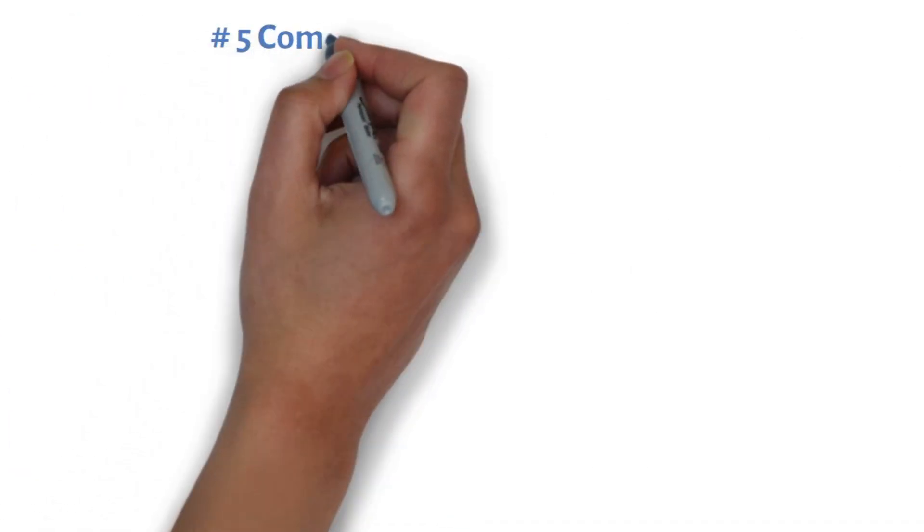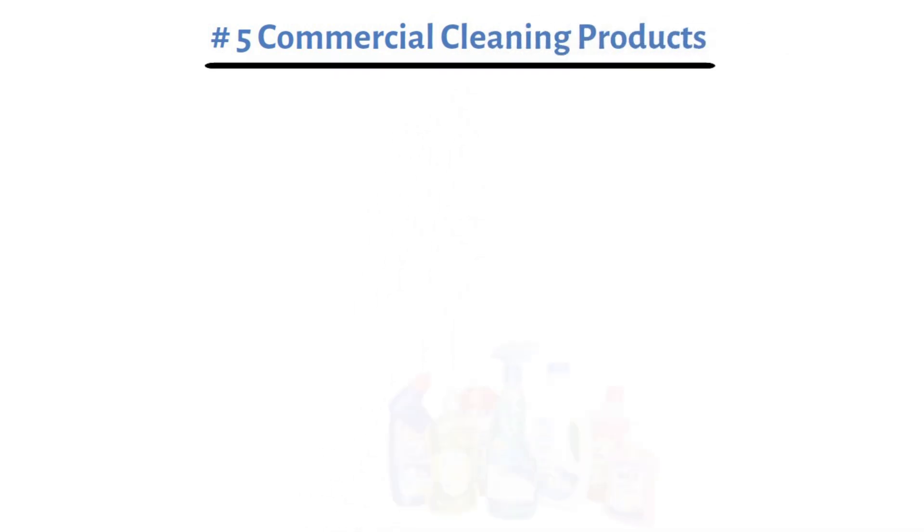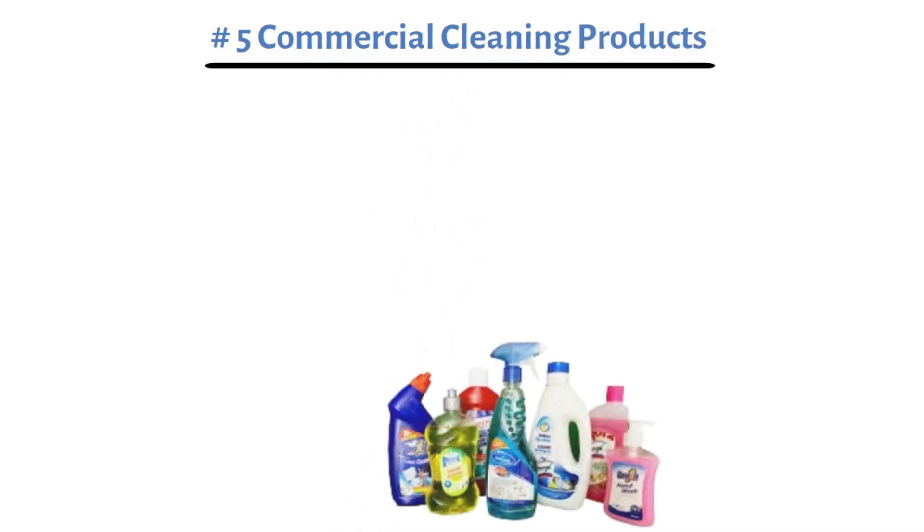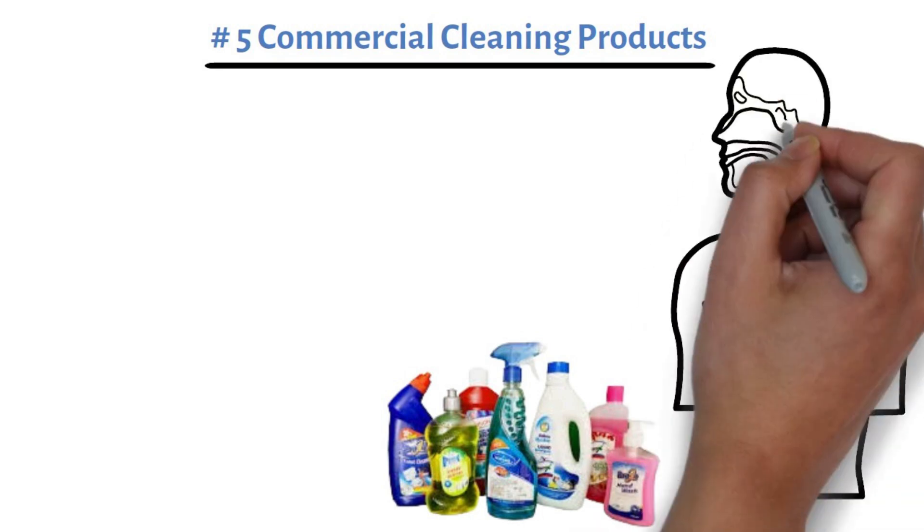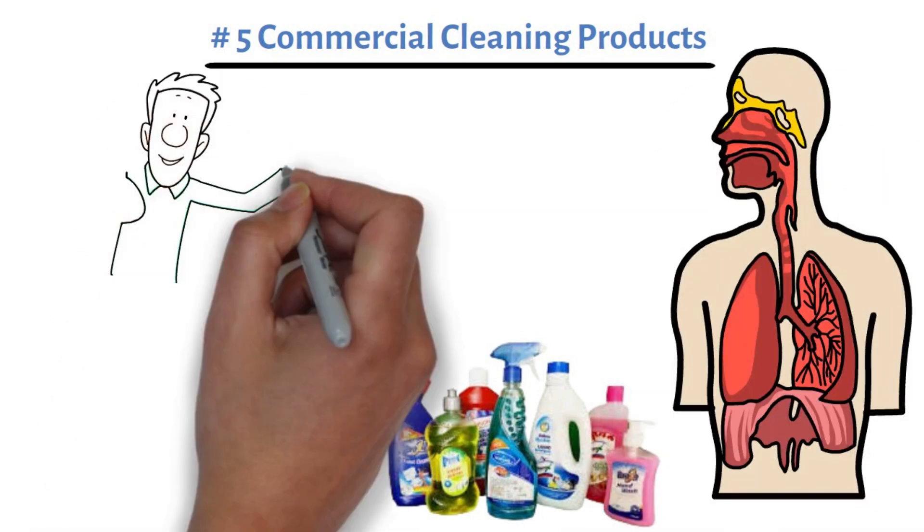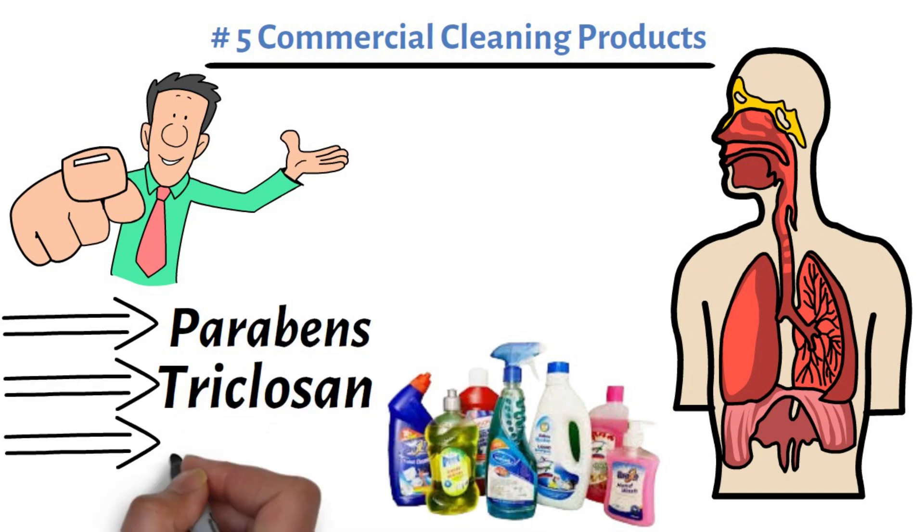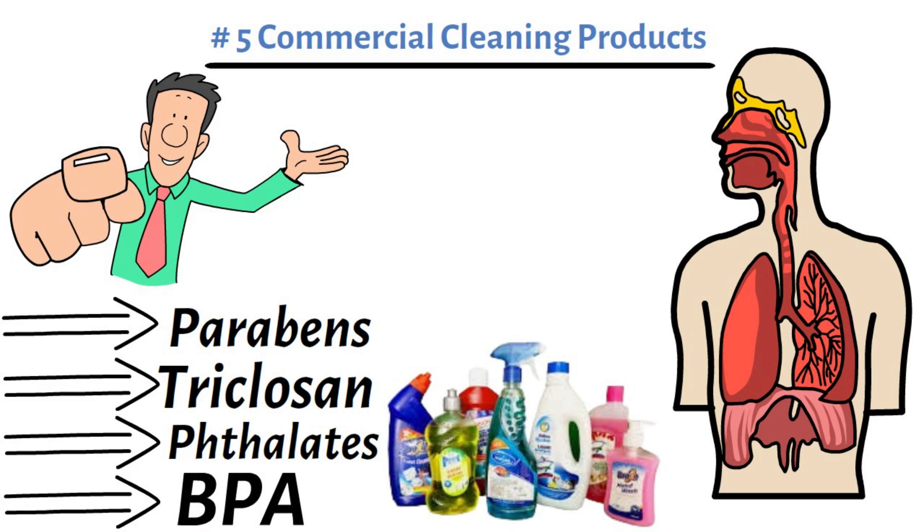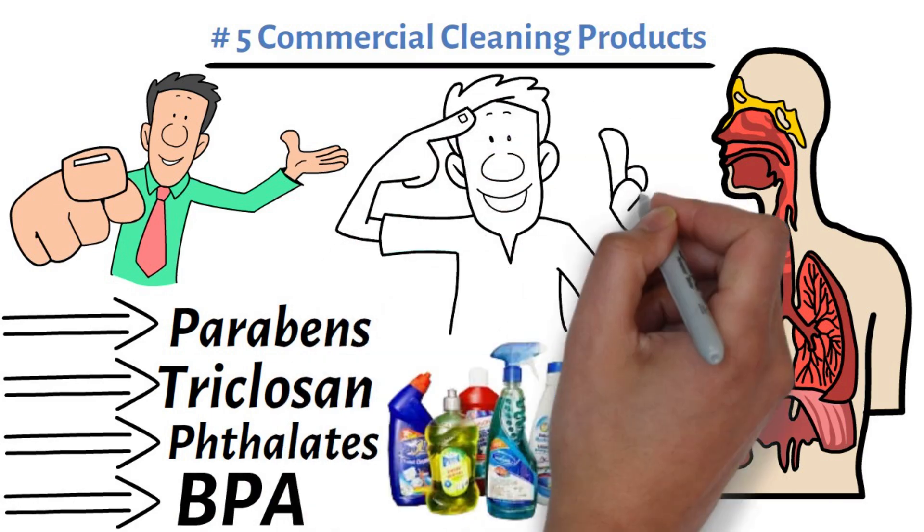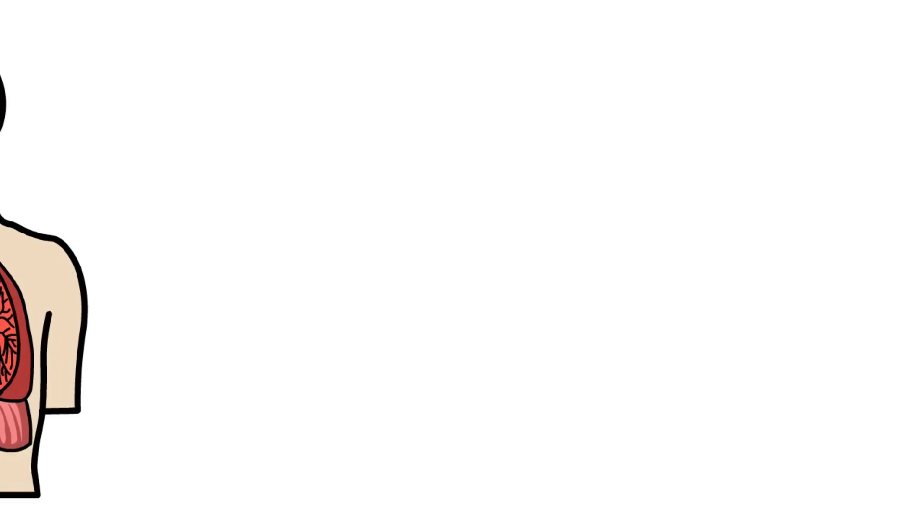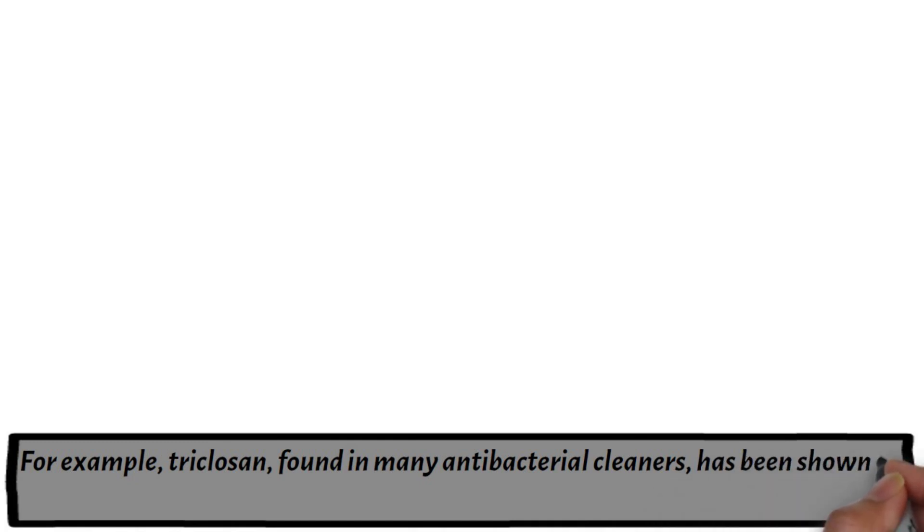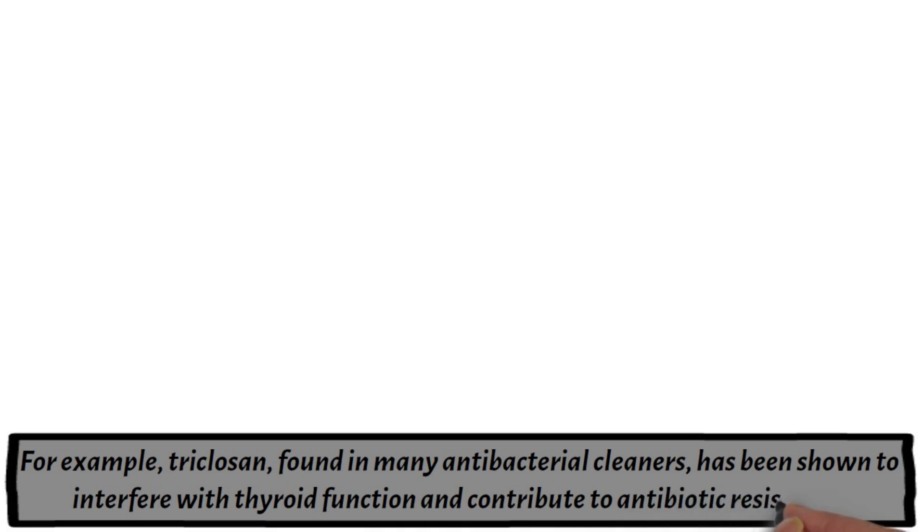Product number five, commercial cleaning products. Many household cleaning products contain harmful chemicals that can cause respiratory disorders and disrupt your hormones. Ingredients like parabens, triclosan, pethalates, and BPA are common in many cleaning solutions and have been linked to various health problems. For example, triclosan, found in many antibacterial cleaners, has been shown to interfere with thyroid function and contribute to antibiotic resistance.